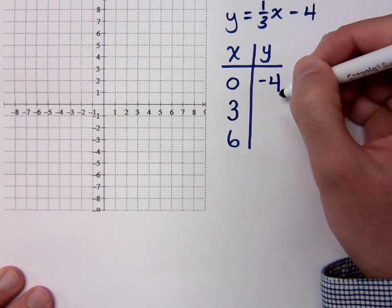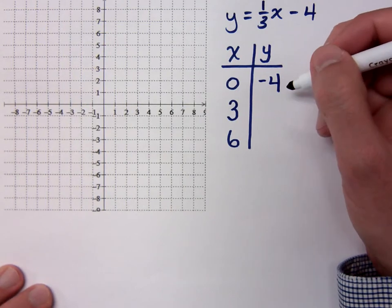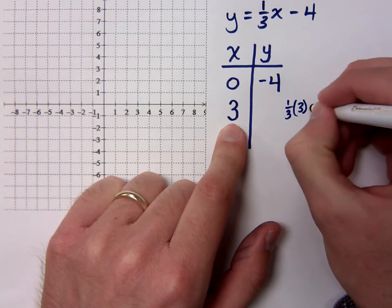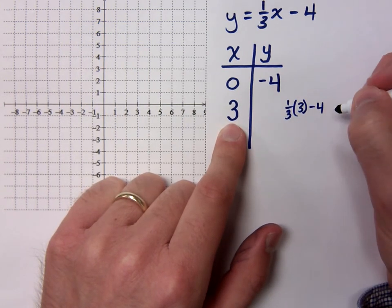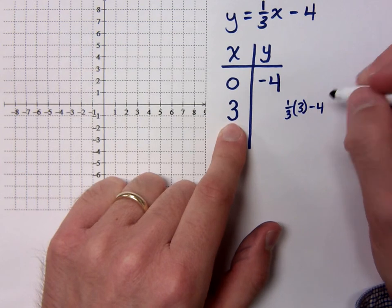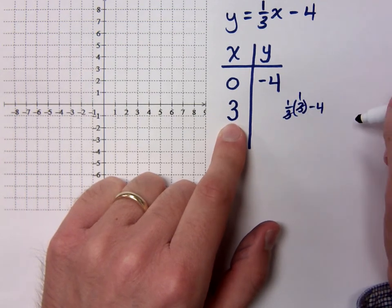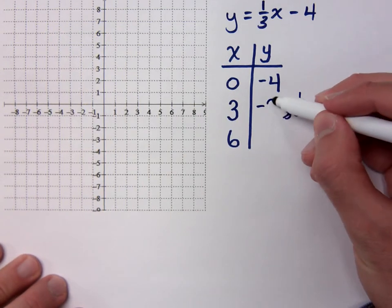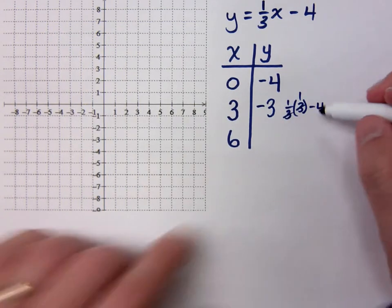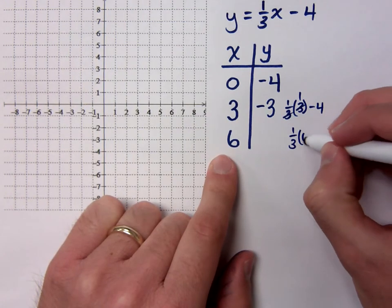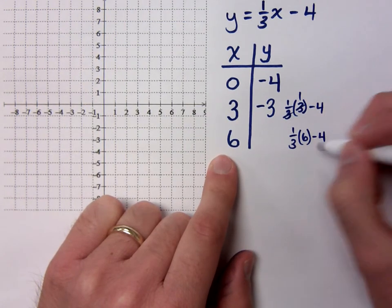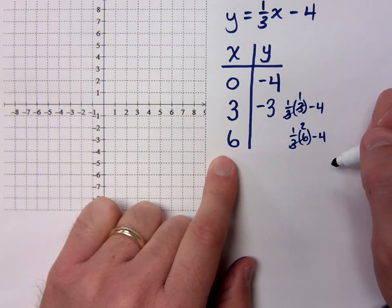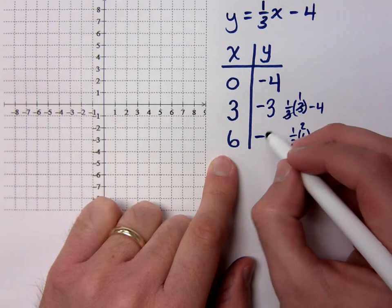Notice how this matches up with the slope-intercept form we just talked about. If I plug in 3, I have one third times 3 minus 4. The 3 reduces to give you a 1, and 1 minus 4 is negative 3. If I plug in 6: one third times 6 minus 4, I get 2 minus 4, so I get negative 2.